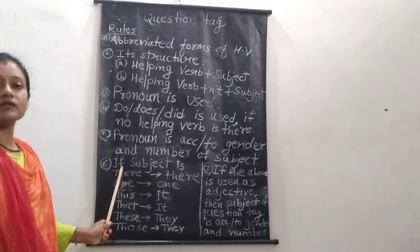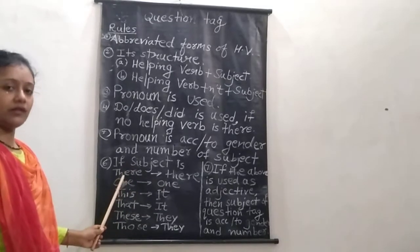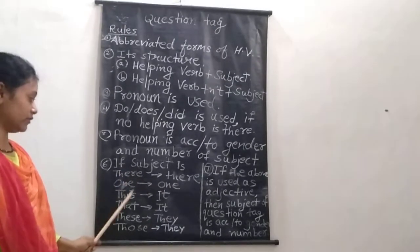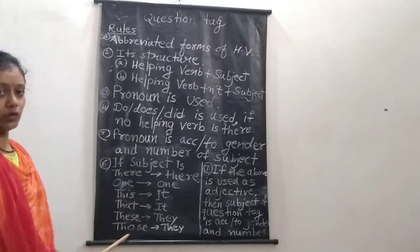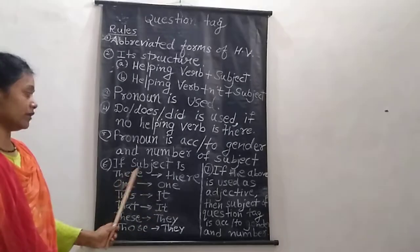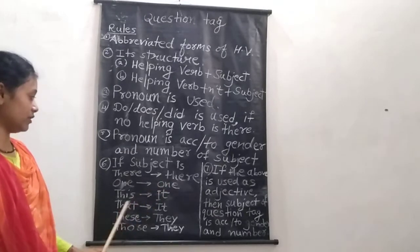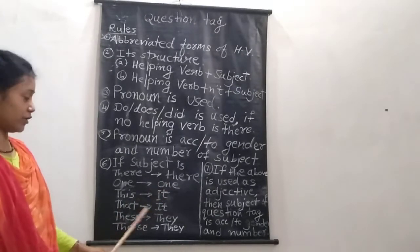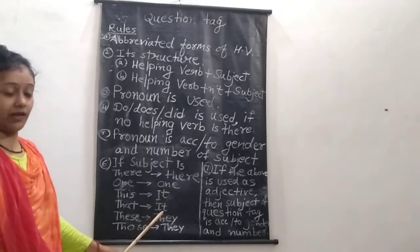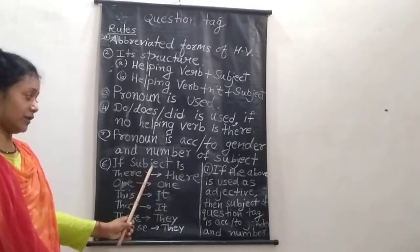Rule 6: If the subject is 'there', 'one', 'this', 'that', 'these', or 'those', it will change as follows: 'there' changes into 'they'; 'one' stays as 'one'; 'this' changes into 'it'; 'that' also changes into 'it'; 'these' becomes 'they'; and 'those' also becomes 'they'.